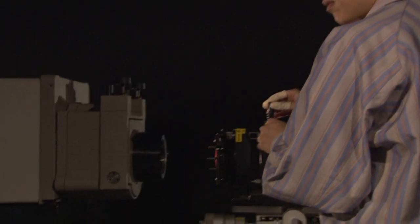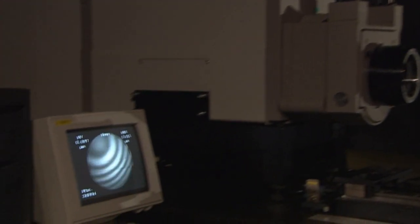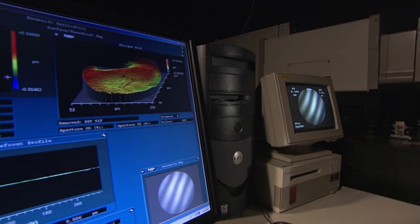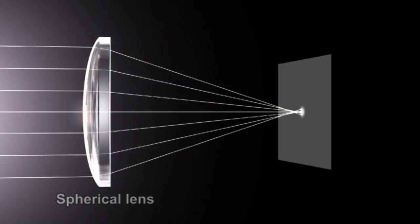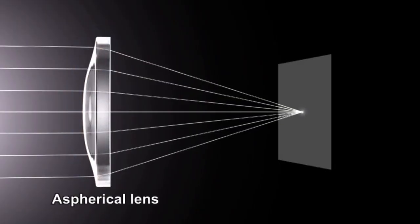Canon has found a revolutionary way to solve the problem of spherical aberration. The solution is an aspherical lens, which is not affected by aberrations on the lens surface.